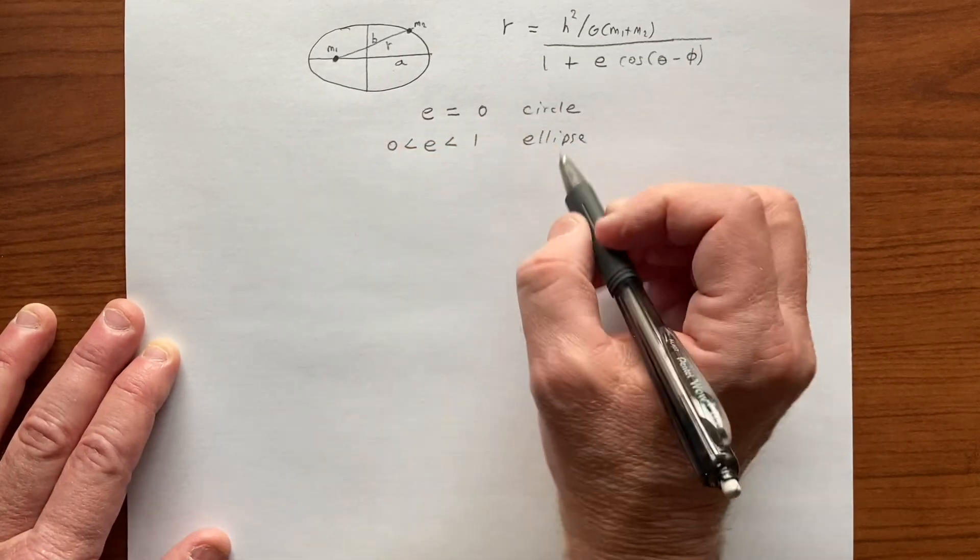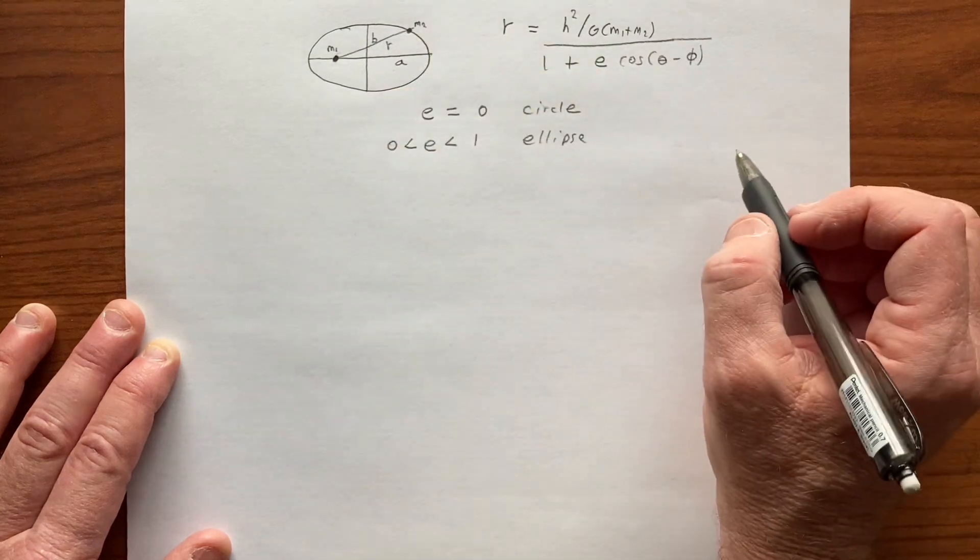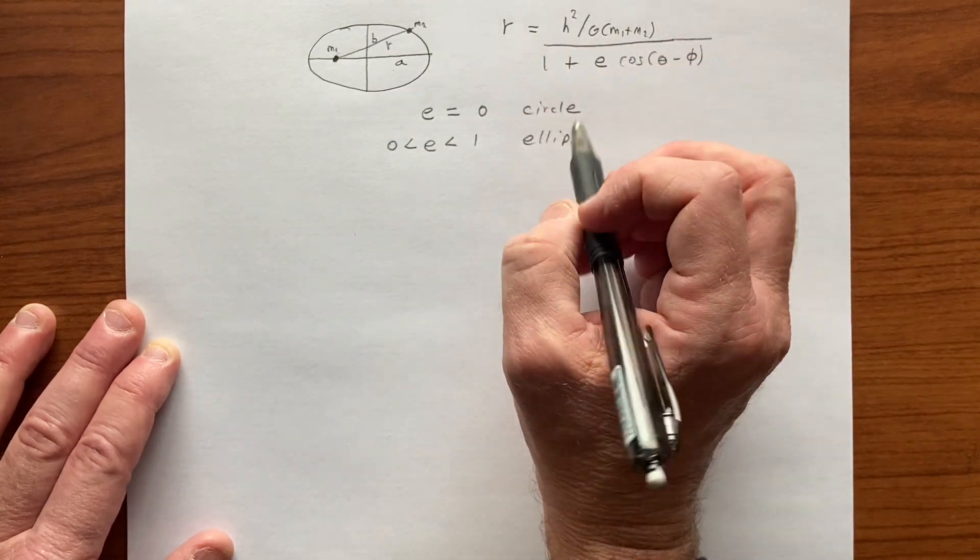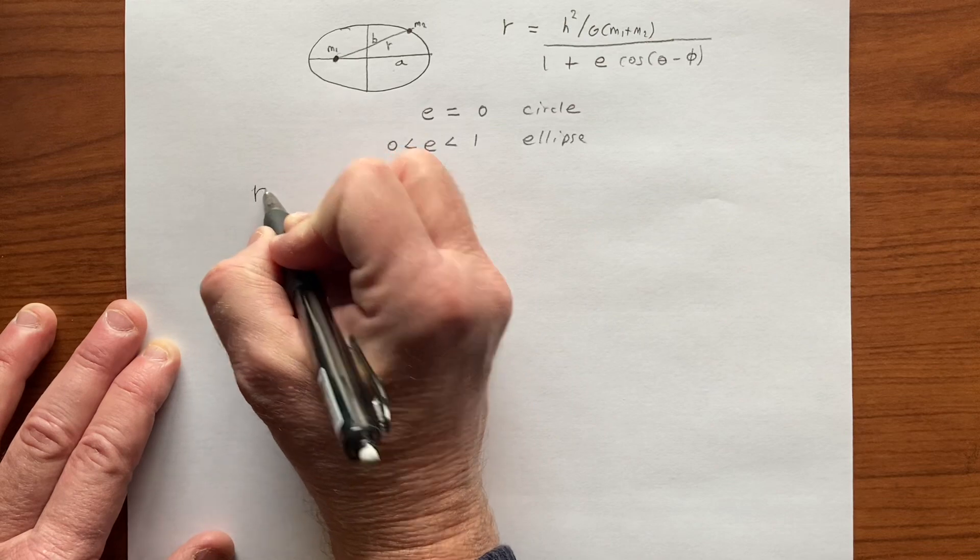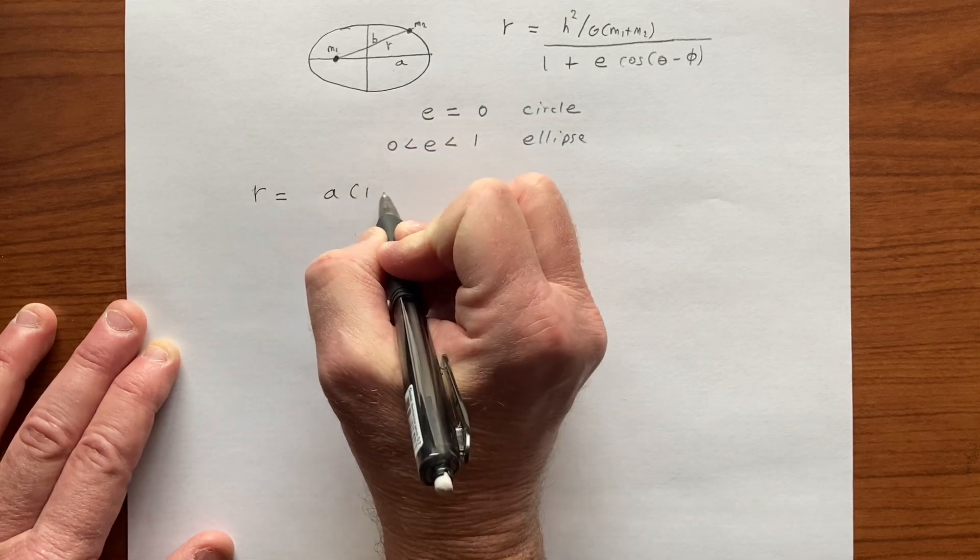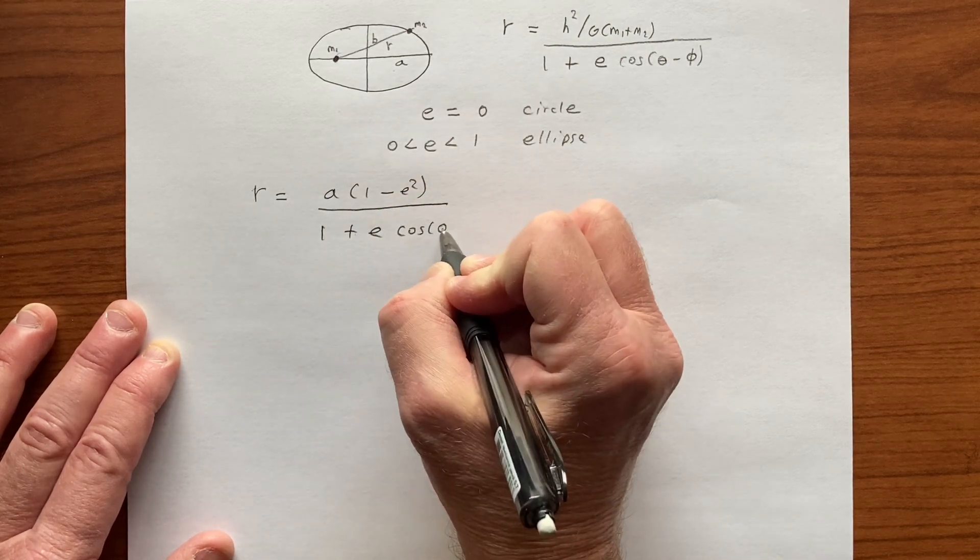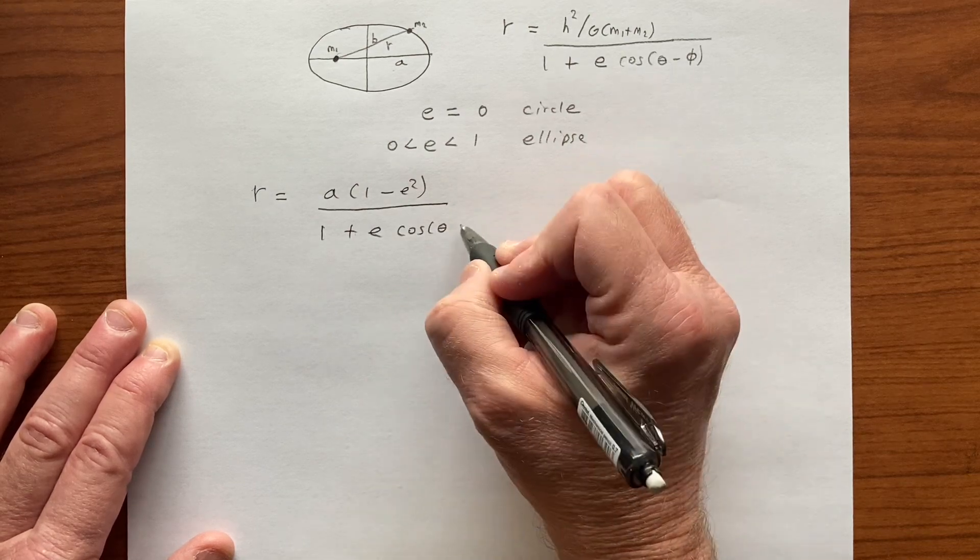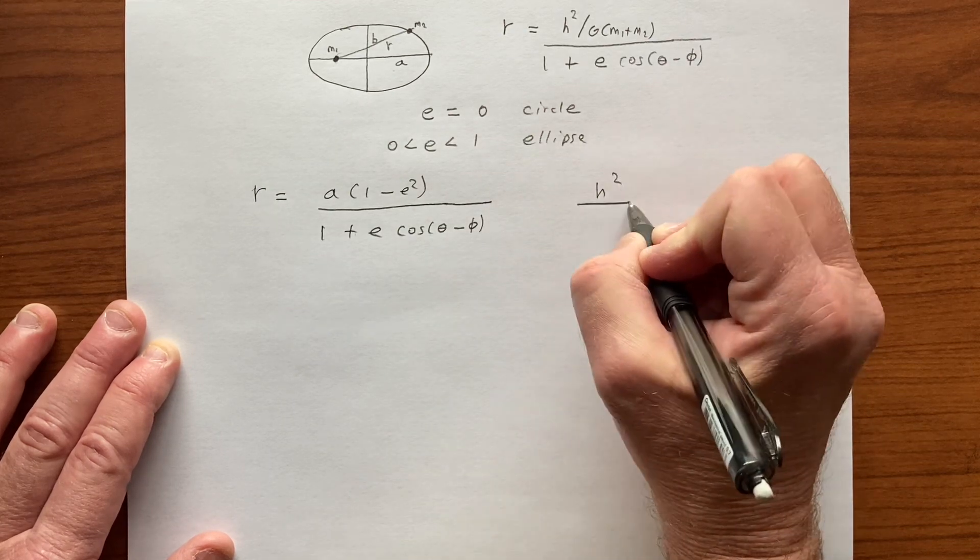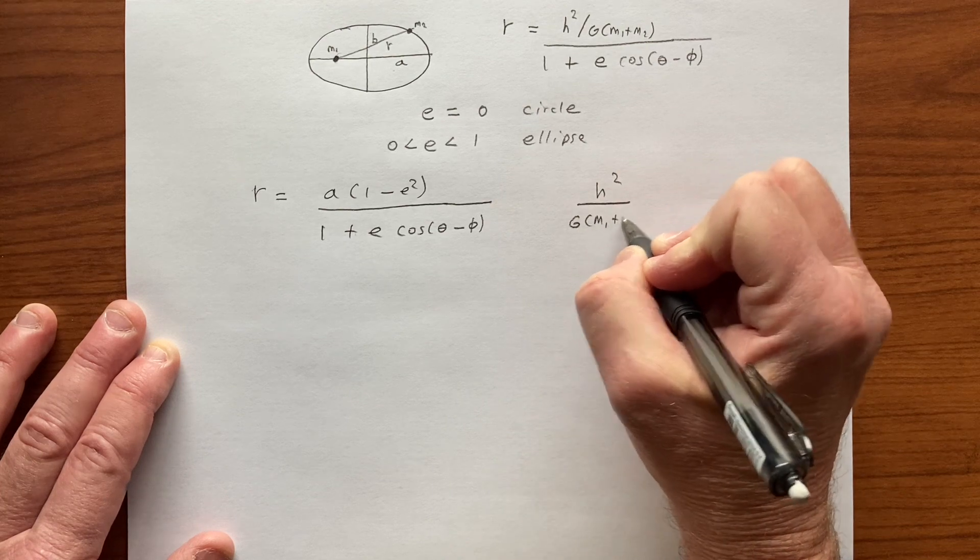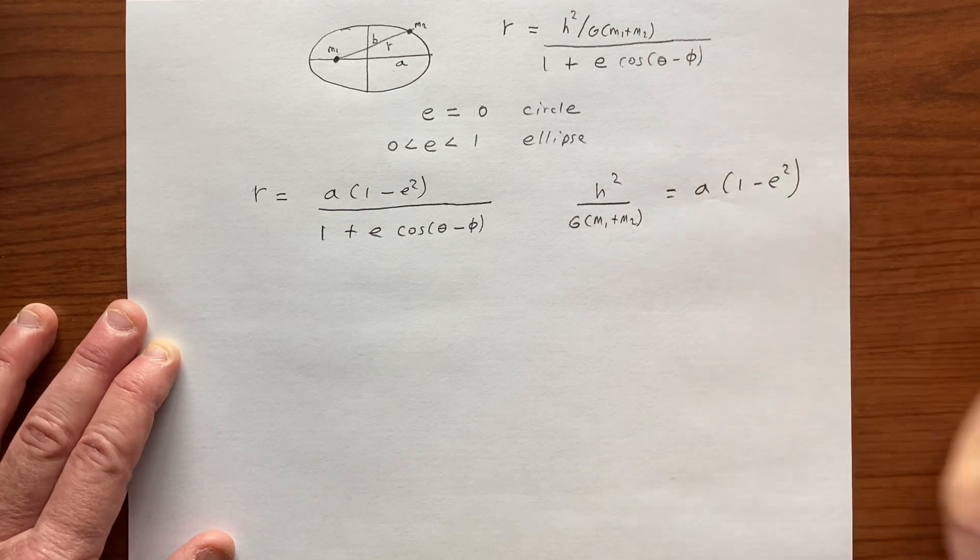It's also possible to write the radius, the radial distance between these two objects in terms of these quantities A, B, and E, and so we could also write that as A times 1 minus E squared over 1 plus E cosine of the angle theta minus phi, which then tells us that this quantity is equal to that from the geometry.